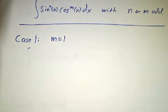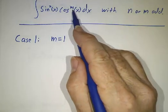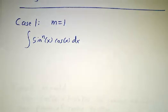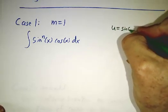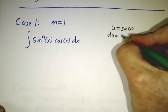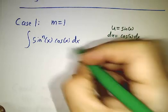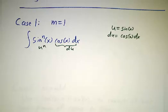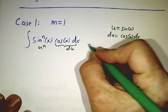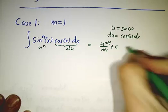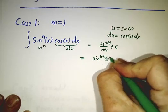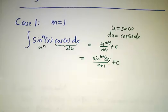The simplest case is when m is 1 — you have 1 power of cos and a bunch of sines. This is a case of u-substitution. Let u equal sin, then du is cos dx. So this part is just du and this part is u to the n. The integral of u to the n du is u to the n plus 1 divided by n plus 1, plus a constant. And that's sin to the n plus 1 of x over n plus 1, plus a constant. Pretty easy.